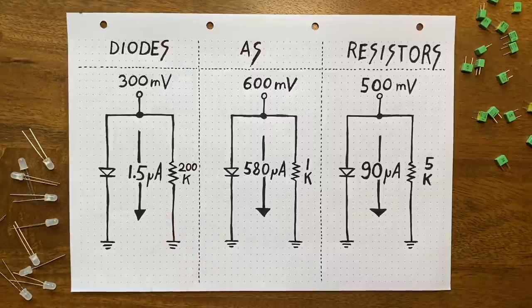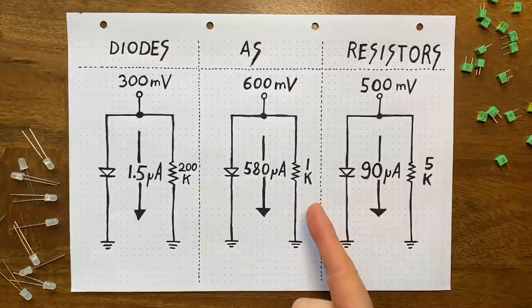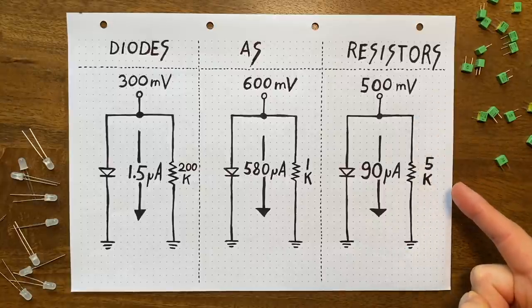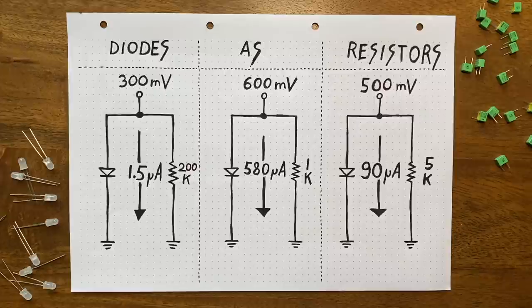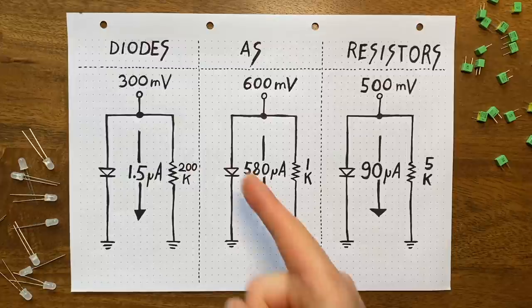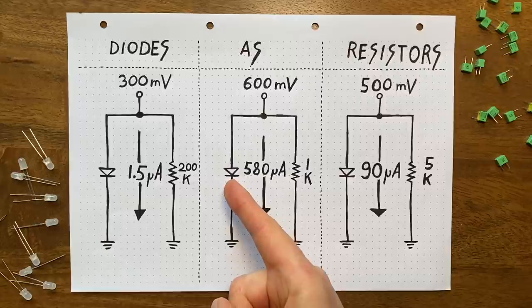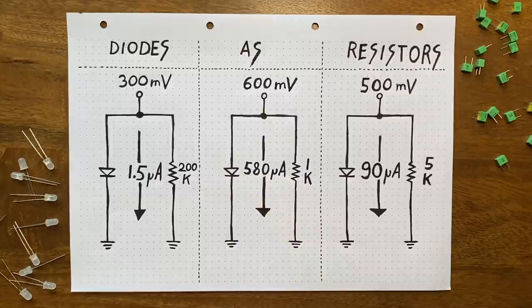Instead, the diode now behaves more like a 1k resistor. And if we decrease the voltage to, say, 500 millivolts, a 5k resistor would be the closest match. So, essentially, you could think of the diode as a voltage-controlled resistor, where the voltage applied to this terminal directly determines the diode's resistance value. Which is exactly what we're looking for.